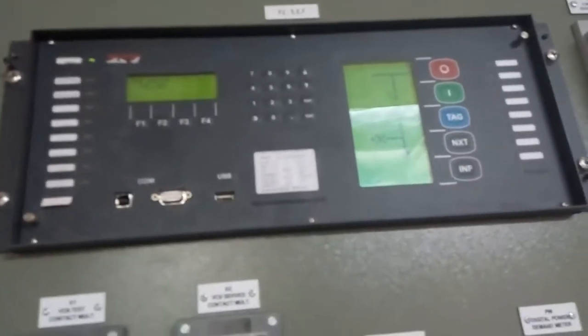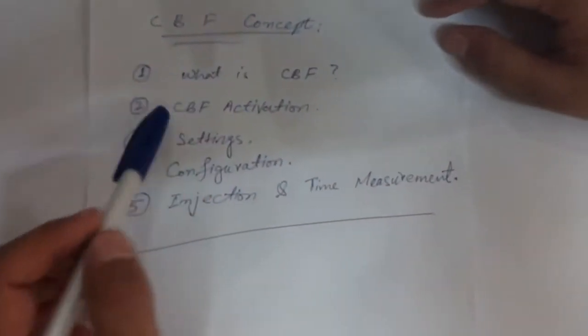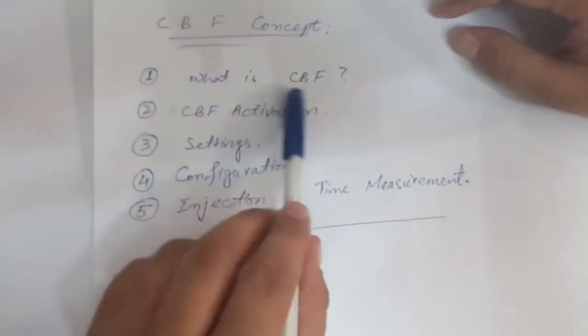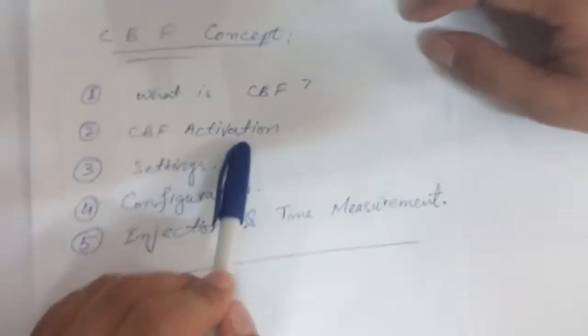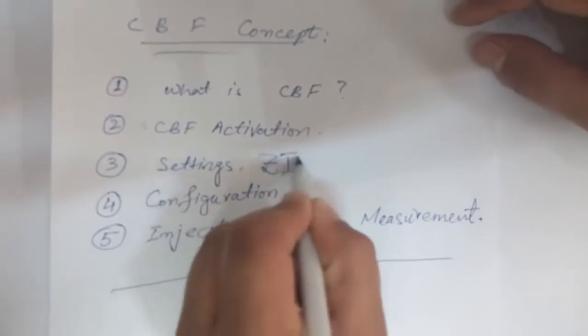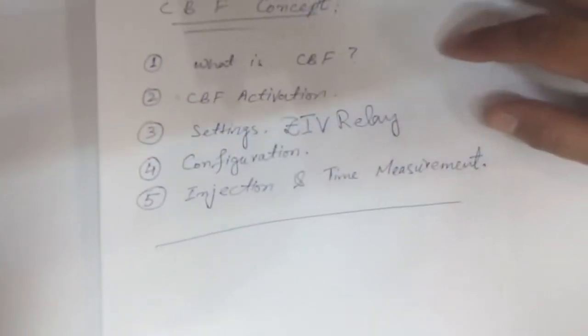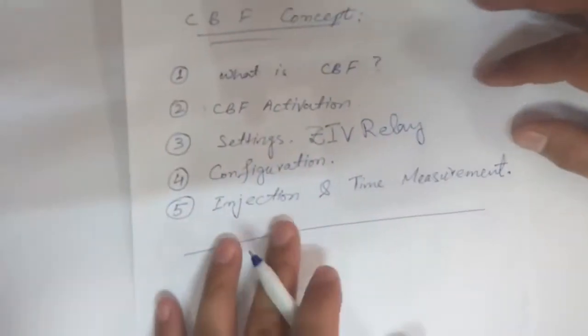Today we are going to teach you about the circuit breaker failure using the ZIV relay, which we will use for current and earth fault protection (F1). This video will cover: what is circuit breaker failure, when circuit breaker failure will be activated, CBF initiate activation, settings from the ZIV relay, configuration, and how we will inject and measure the time.